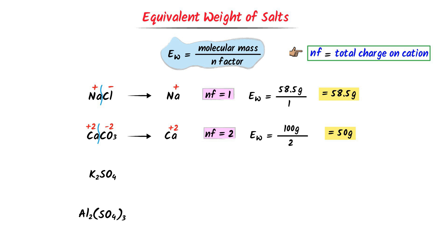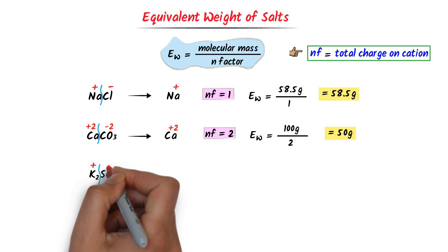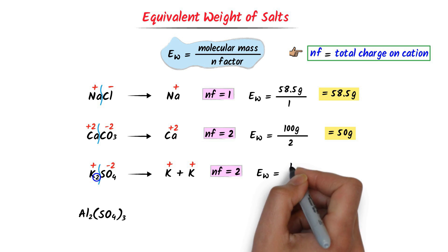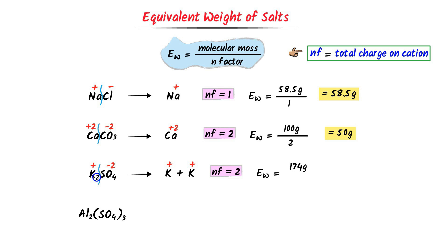In case of potassium sulfate, I break it into two parts. We can see that there are two potassium ions. Each potassium ion carries a positive 1 charge, so two potassium ions carry two positive charges. The N factor of potassium sulfate is 2. Its equivalent weight is equal to the molecular weight, which is 174 gram, upon N factor which is 2. I get 87 gram.